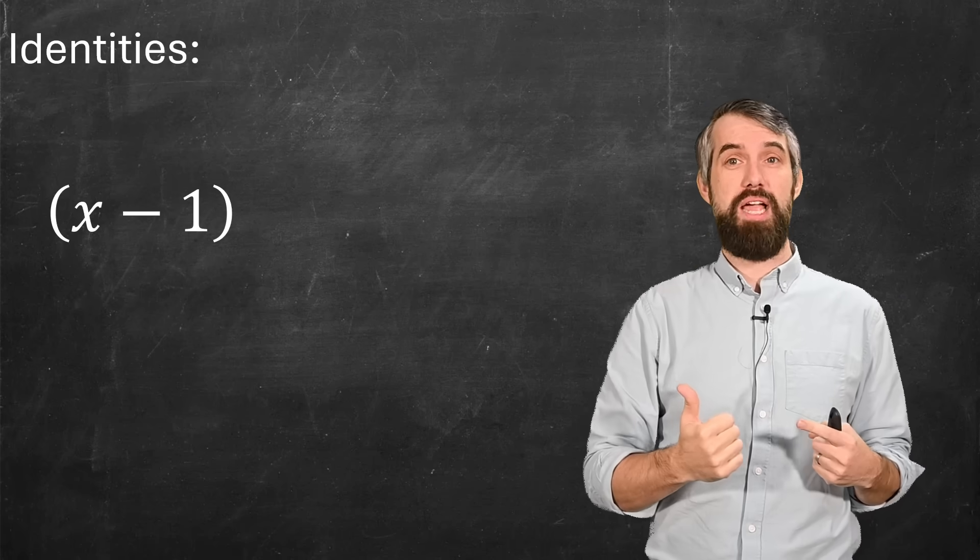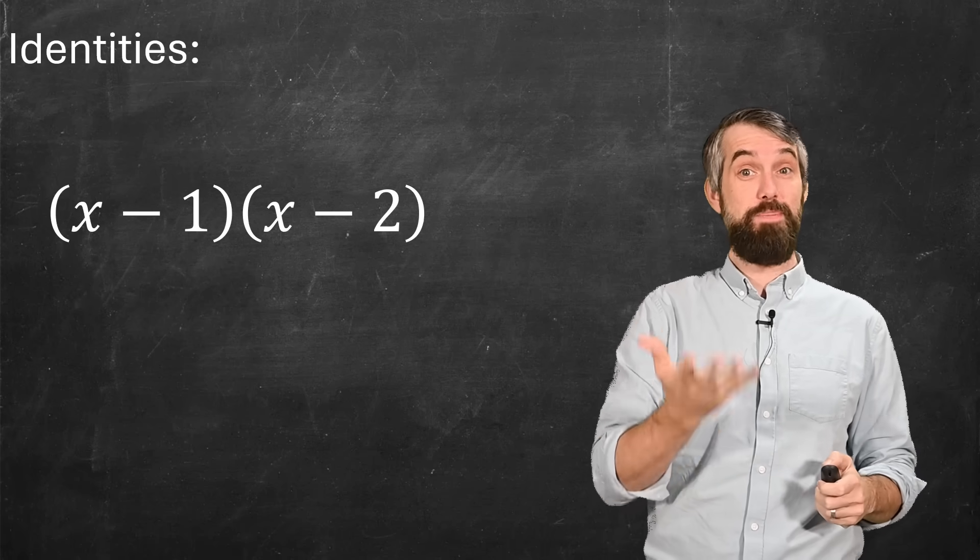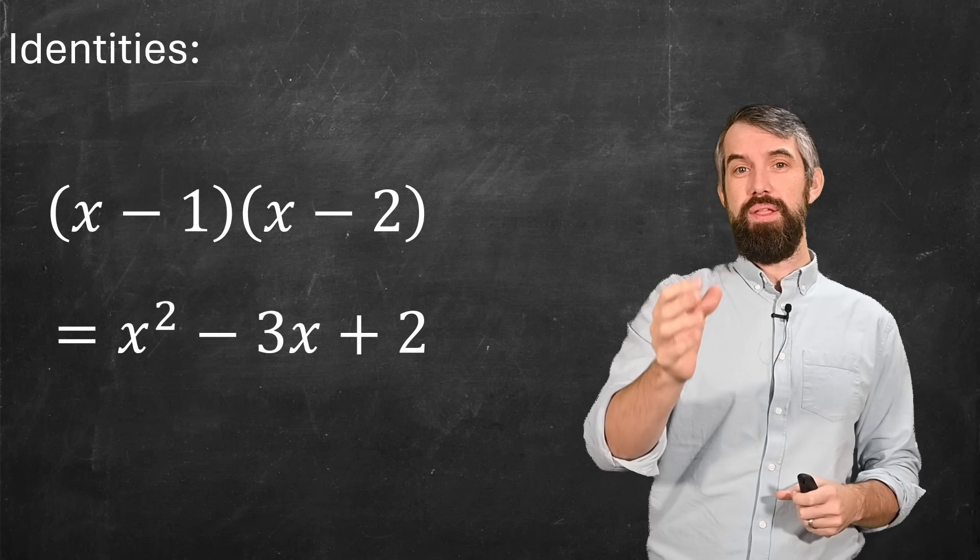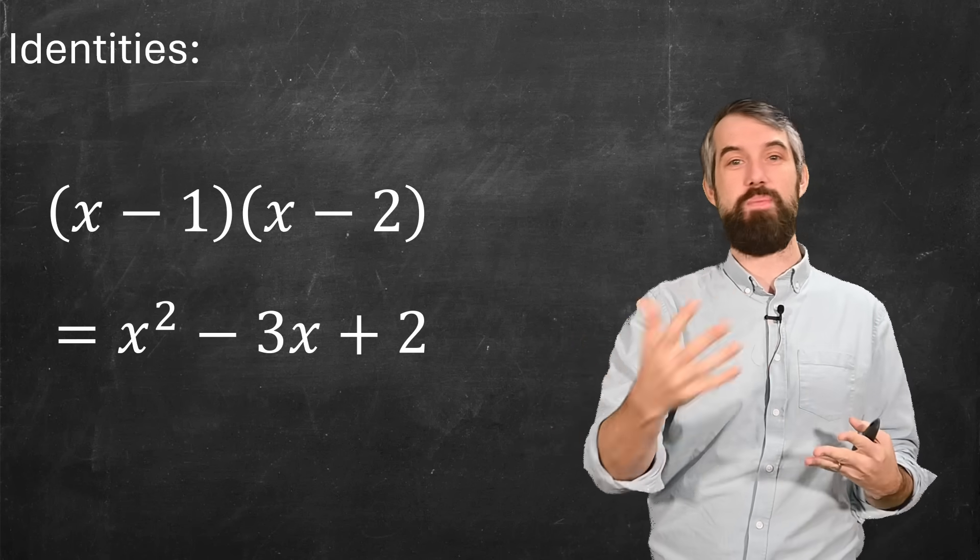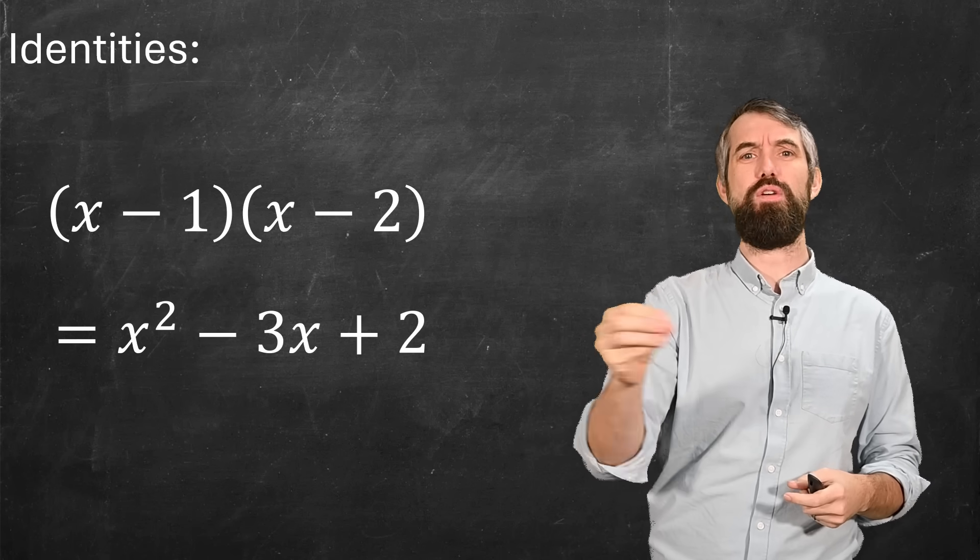In contrast, I'll use the same equal sign for identities. Like if I take the same (x-1) times (x-2) and expand that out, I get x squared minus 3x plus 2. This is an identity. It is always true. It doesn't depend on the value of x. So the equal sign is being used for a bunch of different things.